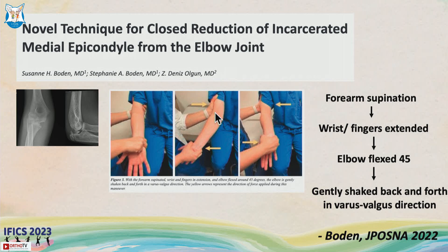For medial epicondyle fractures with intra-articular incarceration, a closed reduction technique was recently described in POSNA 2022. It involves supinating the forearm with the fingers and wrist extended and the elbow flexed to 45 degrees, then gently flexing the elbow and shaking it back and forth in a varus-valgus direction to help reduce the fragment.